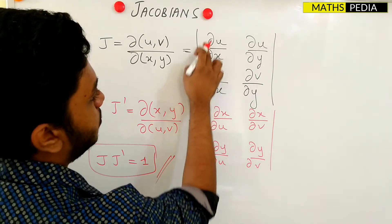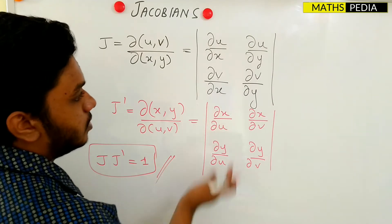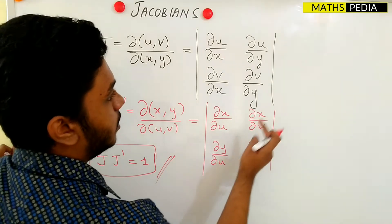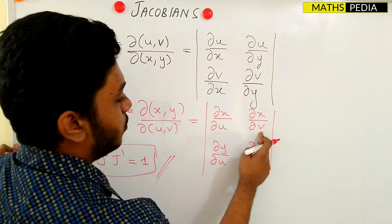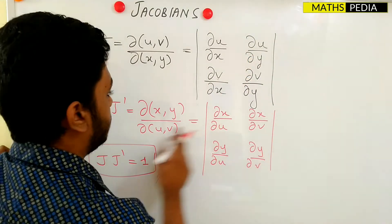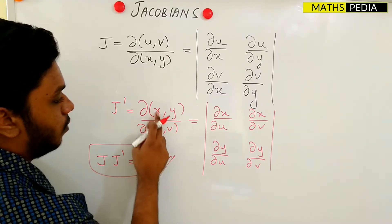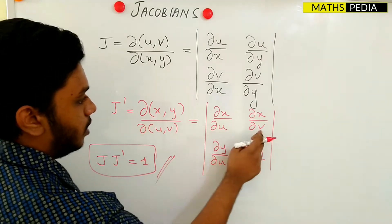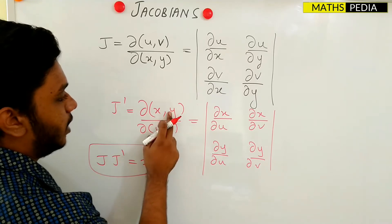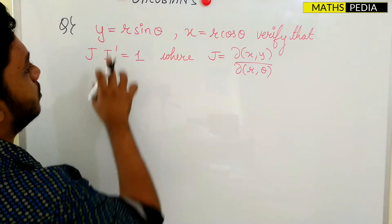Don't simply take the reciprocal of J's determinant elements directly — that won't give J'. Always remember: for J' you must write ∂x/∂u, ∂x/∂v, then ∂y/∂u, ∂y/∂v systematically. Take the first dependent variable x with respect to both independent variables, then the next dependent variable y with respect to both.